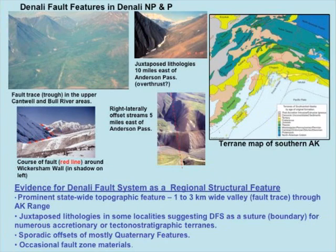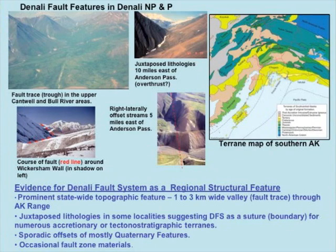The evidence of the Denali Fault System has a regional structure statewide. There's a statewide topographic feature — an obvious trough one to three kilometers wide — representing a fault trace that arcs through most of the Alaska Range. Within the park, we have an obvious fault trough where some sort of movement has occurred. Without excavation, we might not know what kind of movement, but we can see different rock types on each side, with very closely juxtaposed lithologies just east of Anderson Pass, and what appears to be an overthrust, though difficult to confirm as alluvium covers most of the bedrock.